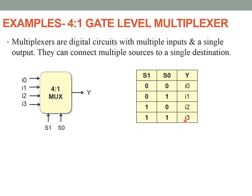Now we have to write a gate level description of this multiplexer. To write a gate level description, we need a gate diagram. To have a gate diagram, we need an expression. From this truth table, we are going to build a Boolean expression, an SOP, to get the logic circuit from that expression.